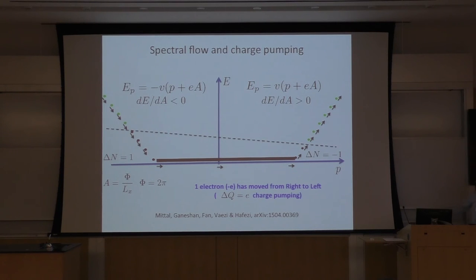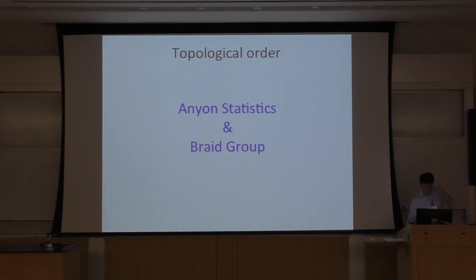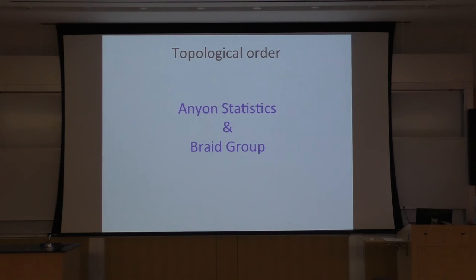In some cases it might be one, but in general it can be anything. This is the main difference between two and higher dimensions. I can show this pictorially: the perpendicular direction is the time direction — I have one particle, and this is my world line. When sigma_i is different from its inverse, exchanging two particles in one direction or the other gives two different answers.